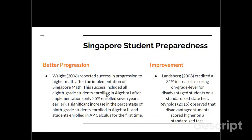Students are also very well prepared when they do Singapore math, progressing better from different levels of math. Wait (2006) had one of the best outcomes in all the research: all eighth grade students enrolled in Algebra 1 after implementation, whereas only 25 percent had been enrolled seven years earlier. There was also a significant increase in ninth graders enrolled in Algebra 2, and students enrolled in AP Calculus for the first time — which is very important because AP Calculus helps you progress in computer science, advanced physics, chemistry, and the math behind science.